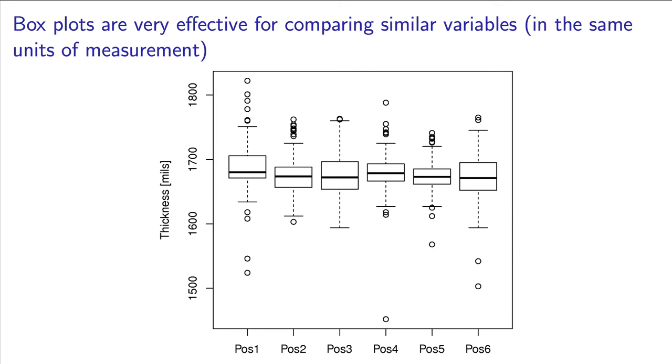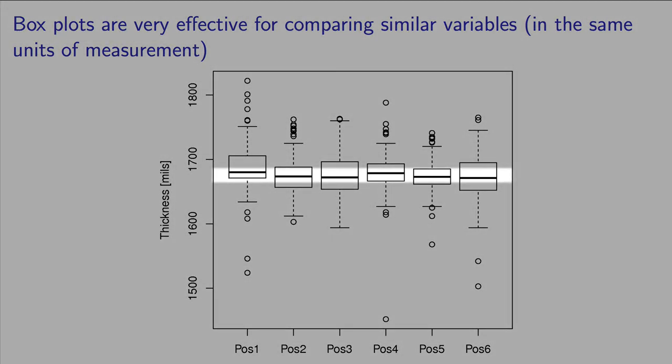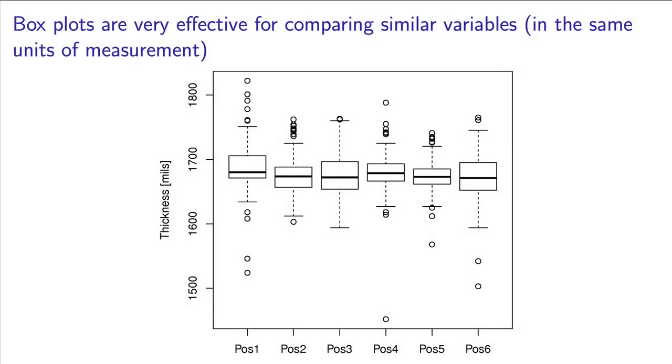It seems like all the boards are close to the target. The dark black line inside each of the box plots, the median, is close to the target 1680 value for all six positions. That is desirable.